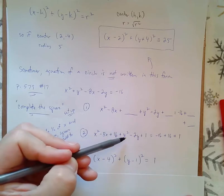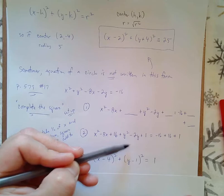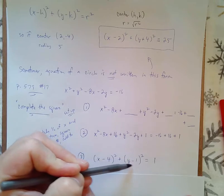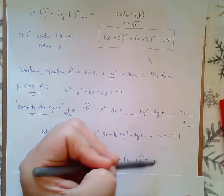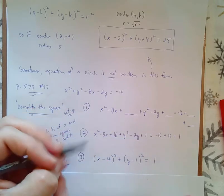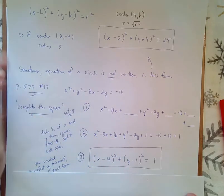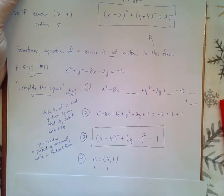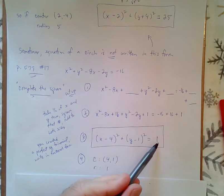Plus, y squared minus 2y plus 1 is a perfect square trinomial to (y - 1) squared. And then I add -16 plus 16 plus 1, and I get 1. And you see, now I have the equation in something that I can work with. Because from here, I know that the center is now (4, 1), and the radius is 1. The square root of 1 is 1.